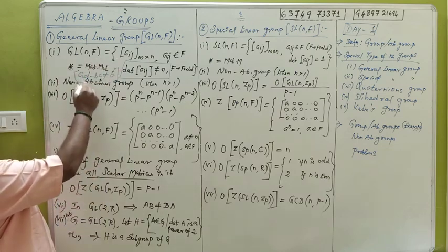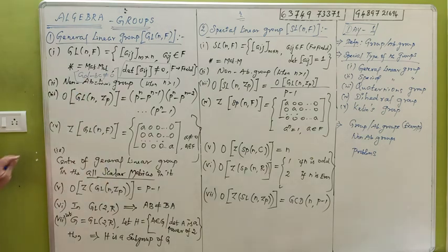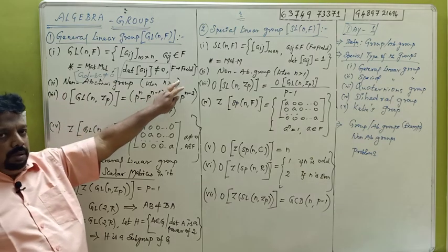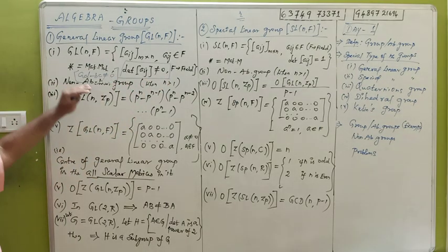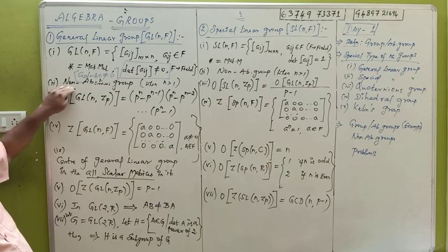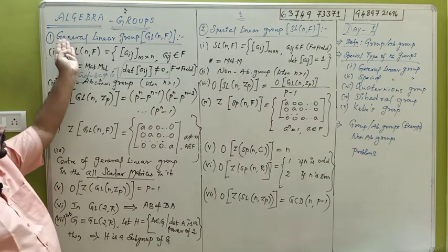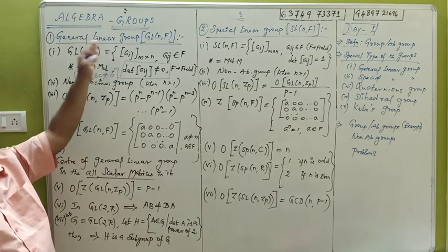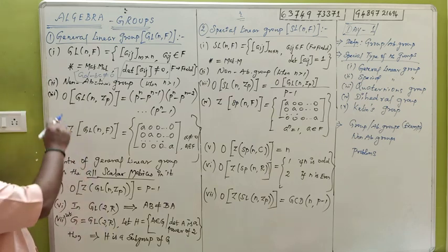This is not a general linear group — this is a non-abelian group. If you get one, you will find one or two or three or four — that is a non-abelian group. Then you will find a non-abelian group, but it is a group. It is important to know that it is a non-abelian group. If you tell one group, it is a non-abelian group. It is not a general linear group — it is a non-abelian group.